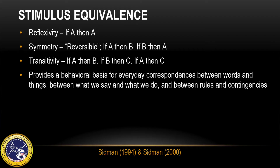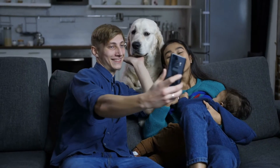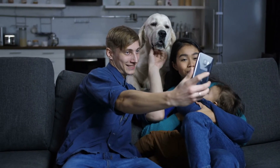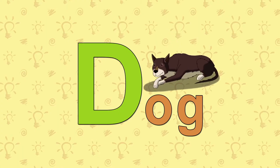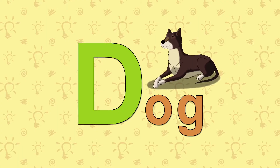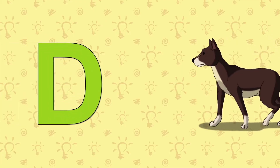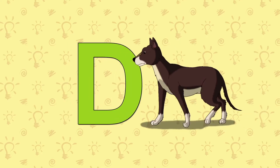Transitivity refers to: if A, then B; if B, then C; if A, then C. In other words, a picture of a dog is equivalent to or the same as the spoken word 'dog.' The spoken word 'dog' is equivalent to or the same as the written word 'dog.' The transitive property then concludes that the picture of the dog is equivalent to or the same as the written word 'dog.'